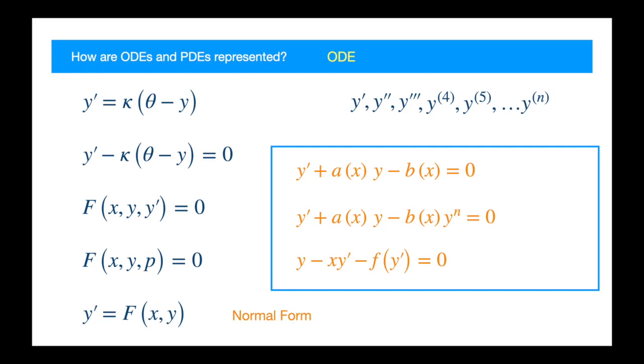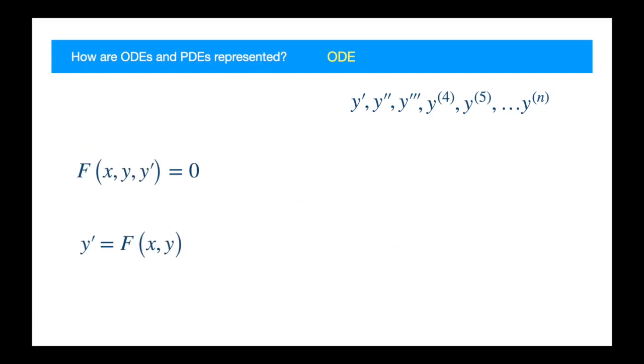But this form facilitates analysis of the ODE. Now, in the single independent variable world, the equation can contain second-order derivative, third-order derivative, and so on. But we can easily represent such equations. We just have to include the additional derivatives in the arguments, and we might be able to isolate the highest derivative and write the equation in the normal form.